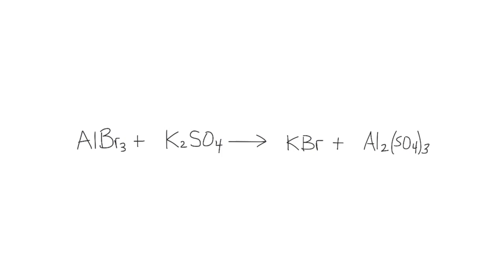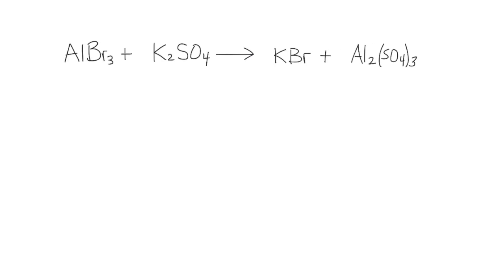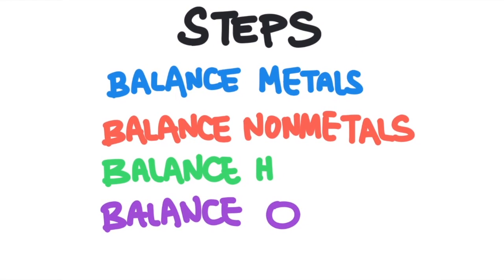Now let's look at an example of a chemical equation and see if we can balance it. This one is quite a bit more complex, but I'm going to show you a step-by-step system that, if you follow it, should allow you to balance any chemical equation. The way the system works is that we just work through each element step by step, making sure the total number of that element is the same on both sides.